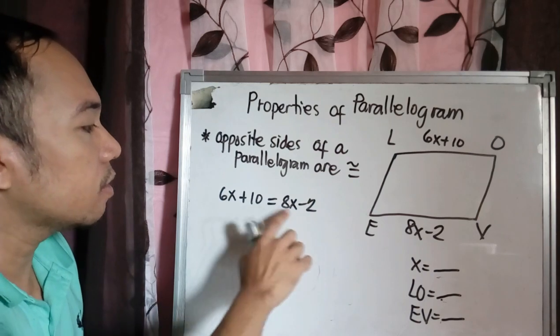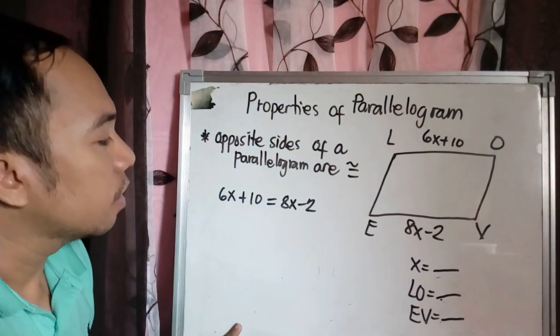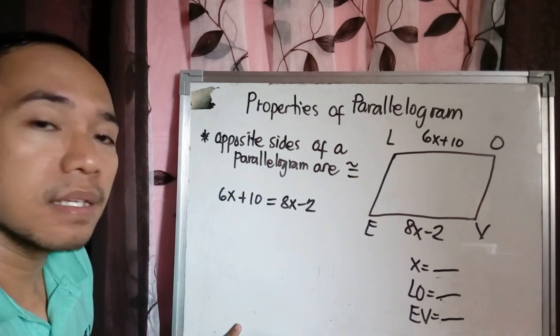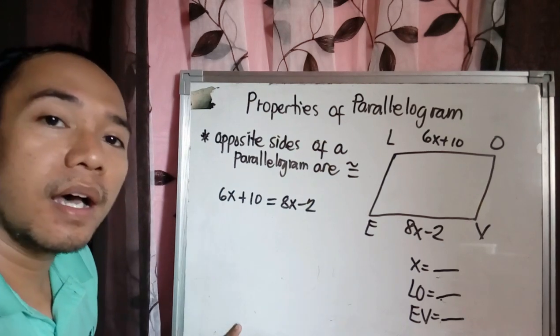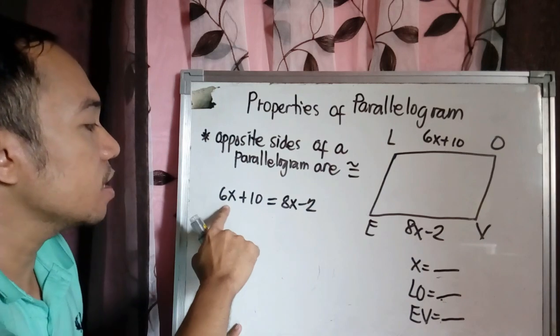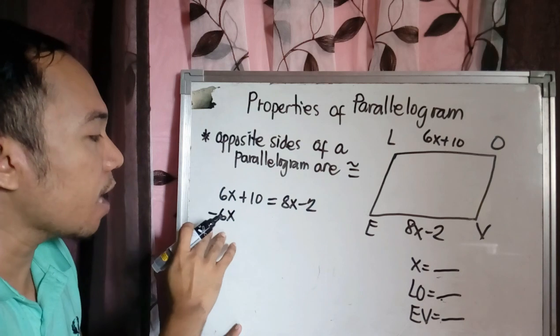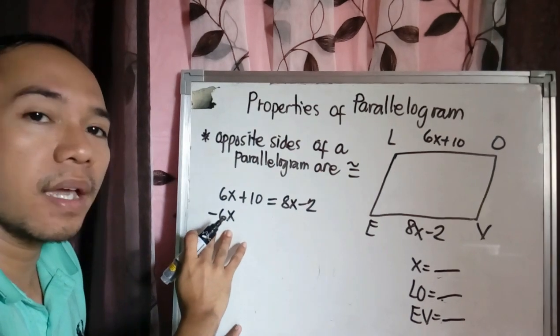So first, look at your X. You have 6X and 8X. Eliminate the smaller one. So you have 6X, eliminate this. If you subtract negative 6X at the left side, you will also subtract at the right side by the property of equality.